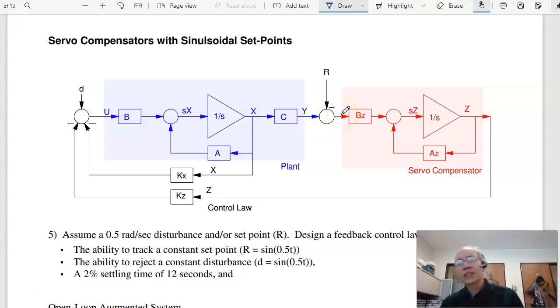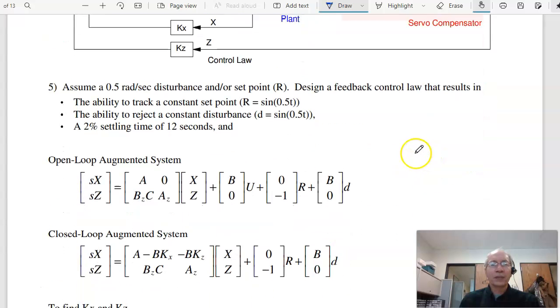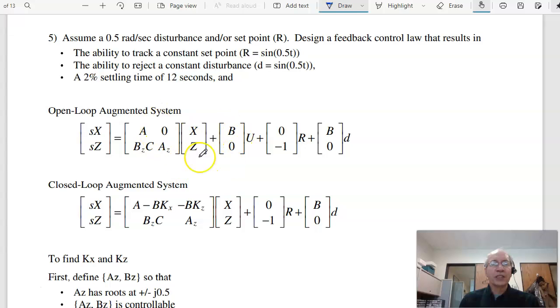Now the second one I asked is, what happens if I want to track a sinusoidal setpoint? Well, in that case, it's almost the same solution, except that now I pick a servo compensator that has poles at the frequency of my disturbance, or my setpoint. If this is at 0.5 radians per second, pick this at half eigenvalues, at plus or minus j.5. So again, I've got the augmented system, same as before, but now this has poles at plus or minus j.5. I now have a sixth-order system, four poles for the plant, two for the servo compensator. So I'm going to come up with six feedback gains. The first four Kx, the last two are for the servo.